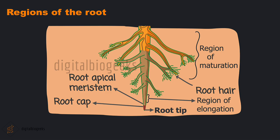Let's recap the regions of a root. There is a root tip covered by the root cap. Above that is the root apical meristem. Above that is the region of elongation, and some cells of the region of elongation become mature and form the region of maturation. In the region of maturation, some epidermal cells form very delicate thread-like structures called the root hairs.